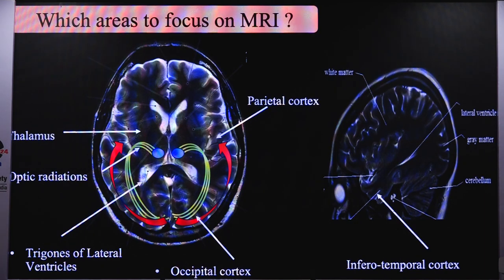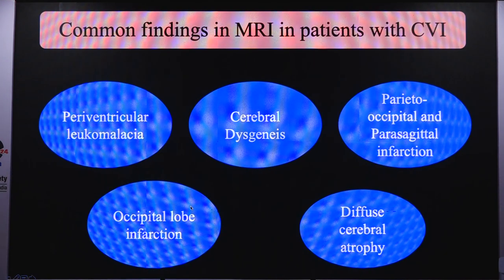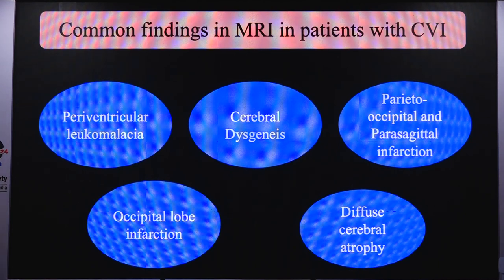Which areas to focus on in MRI? It is the retrogeniculate pathway that causes higher visual function deficit. You should focus on the retrogeniculate pathway, which includes the optic radiation, parietal cortex, trigones of the lateral ventricle, occipital cortex, thalamus, and inferotemporal cortex. Common MRI findings include periventricular leukomalacia — the commonest — as well as cerebral dysgenesis, parietooccipital and parasagittal infarction, occipital lobe infarction, and diffuse cerebral atrophy.